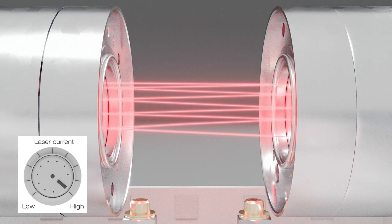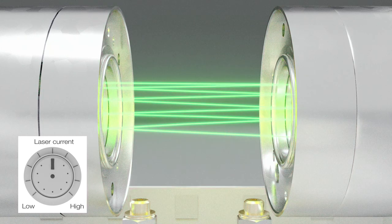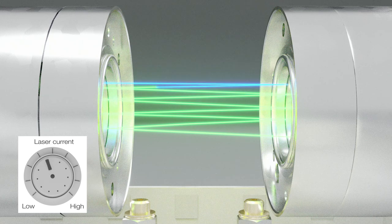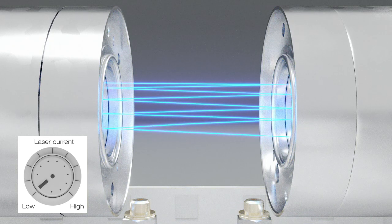The laser beam is tunable in a range of a few nanometers by varying the laser current or temperature. For this reason, depending on the spectrum, up to three gases can be measured with only one laser diode.